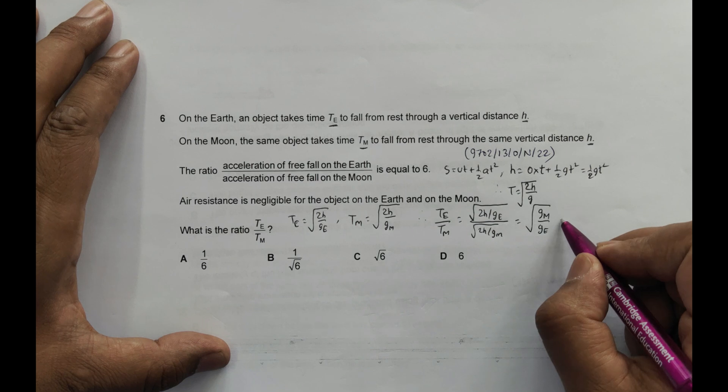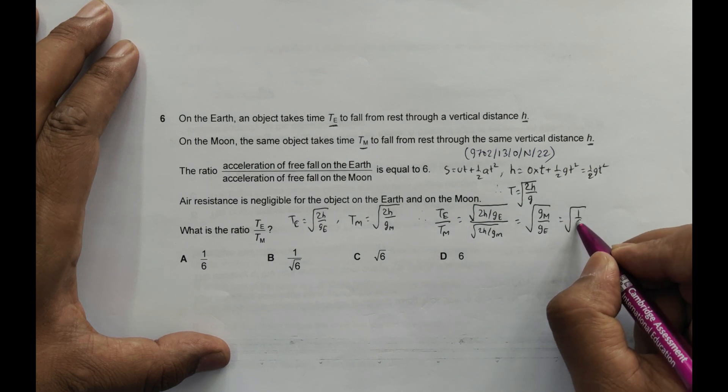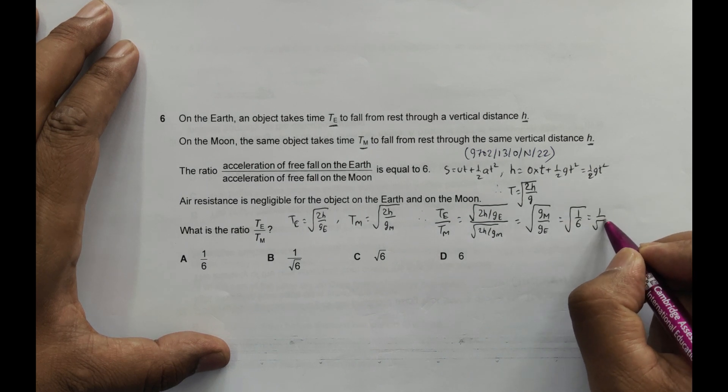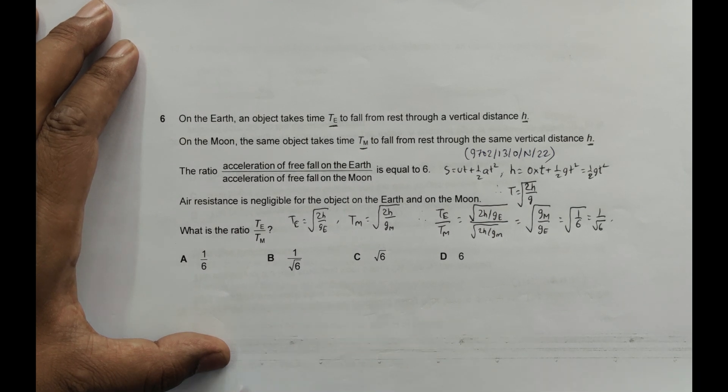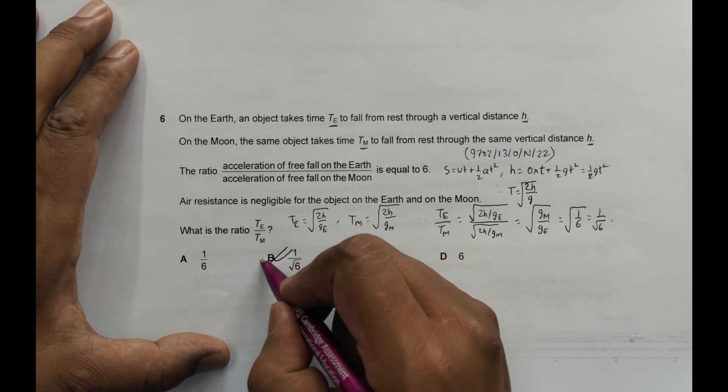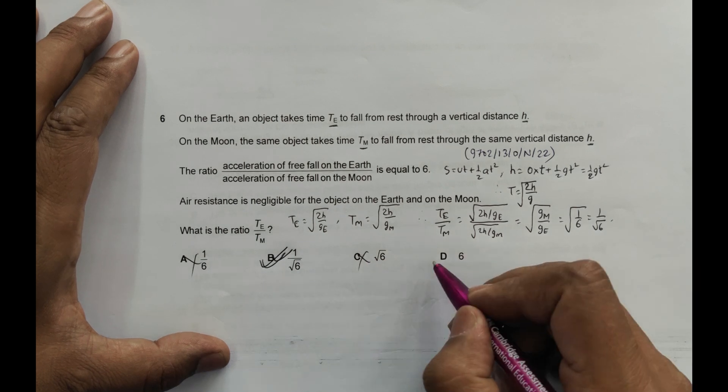Now, ge by gm equals 6, so this should be equal to the square root of 1 by 6, which equals 1 by the square root of 6. So if I go to the choices, then choice B is the correct choice. All the others are incorrect.